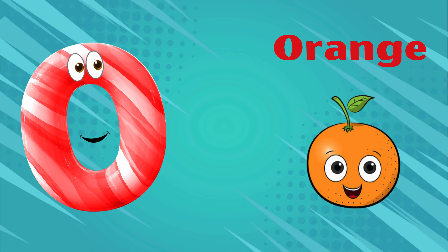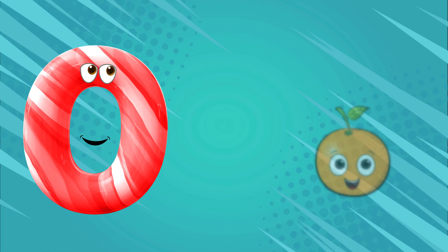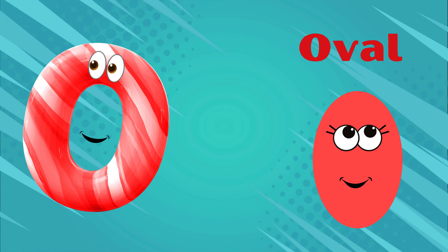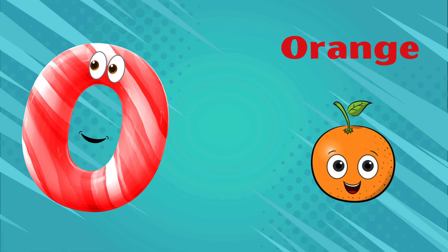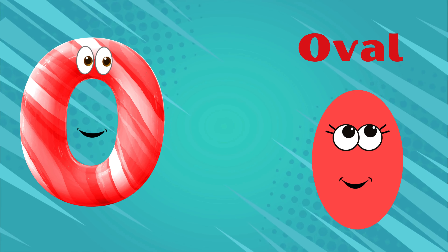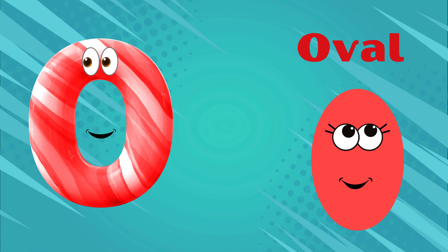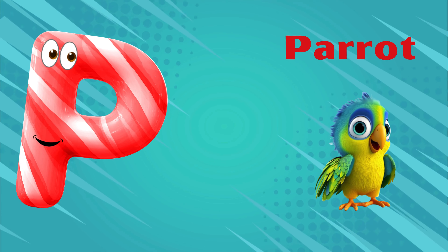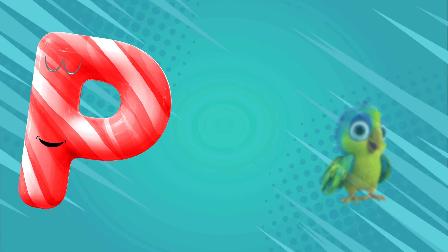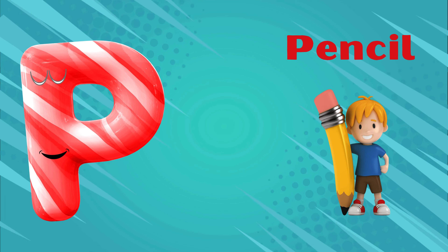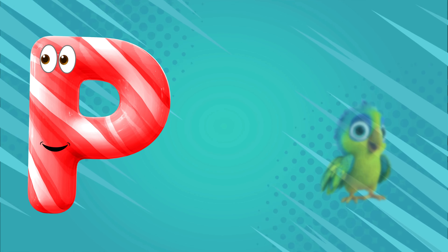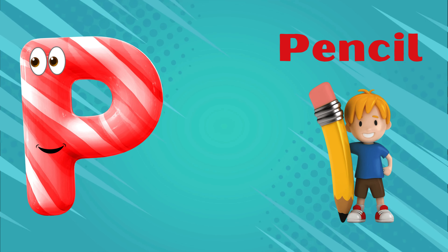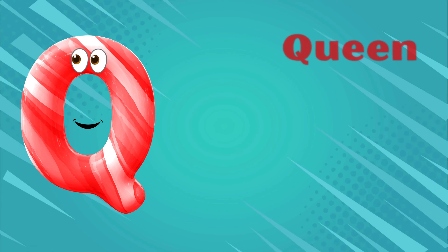O is for orange, o-o-orange. O is for oval, o-o-oval. O is for o-o-o-orange. O is for o-o-o-oval. P is for parrot, pa-pa-parrot. P is for pencil, pa-pa-pencil. P is for pa-pa-pa-parrot. P is for pa-pa-pa-pencil.